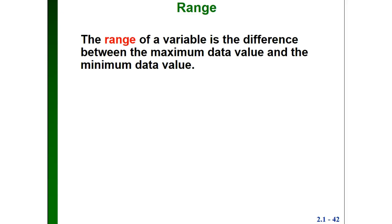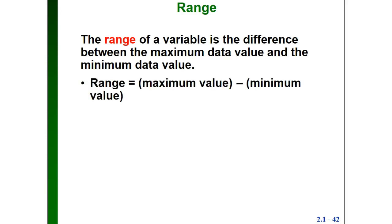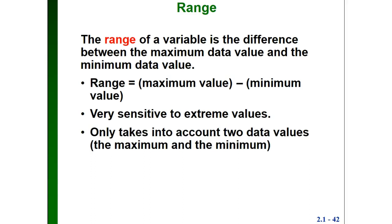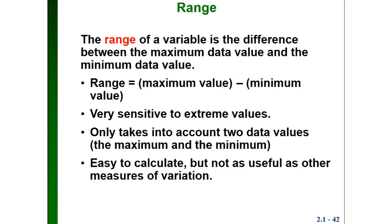The range of a variable is just the difference between the maximum data value and the minimum data value: range equals maximum value minus minimum value. The range is very sensitive to extreme values because it only uses the maximum and the minimum — it doesn't take into account the rest of the values in the data. So it's very easy to calculate, but because it's so sensitive to extreme values and only uses two data points, it's not as useful as some other measures of variation.